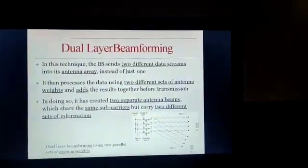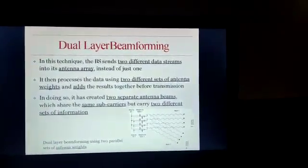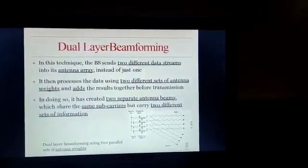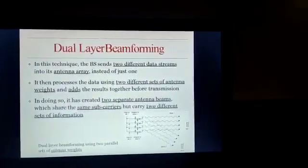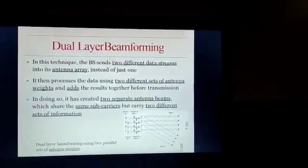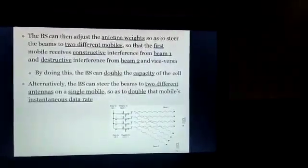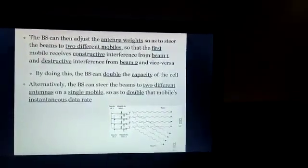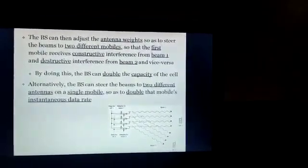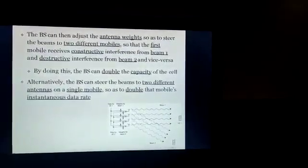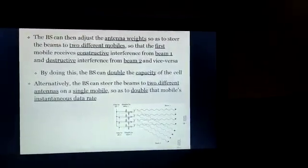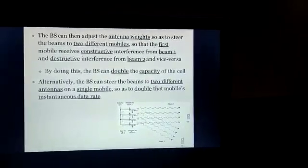In dual-layer beamforming, the base station sends two different data streams into an antenna array instead of just one. It processes the data using two different sets of antenna weights and adds the results together before transmission, creating two separate antenna beams that share the same subcarrier but carry two different sets of information. The base station can adjust the antenna weights to steer the beams to two different mobiles, so the first mobile receives constructive interference from beam 1 and destructive interference from beam 2, and vice versa. By doing this, the base station can double the capacity of the cell, or alternatively steer both beams to two different antennas on a single mobile to double the mobile data rate.